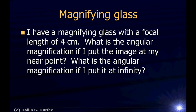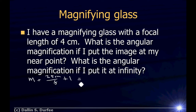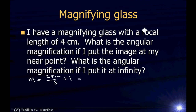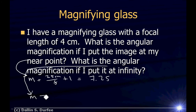Magnifying glass problem: I have a magnifying glass with a focal length of 4 centimeters. What is the angular magnification if I put the image at my near point, and at infinity? At the near point, angular magnification is 25 cm / F + 1, so 25/4 + 1 = 7.25. If I put the image at infinity, I just drop the 1, giving 25/4 = 6.25.